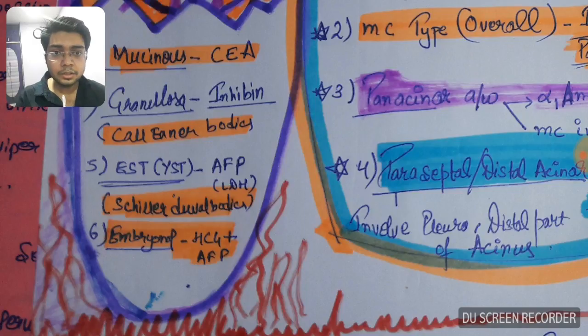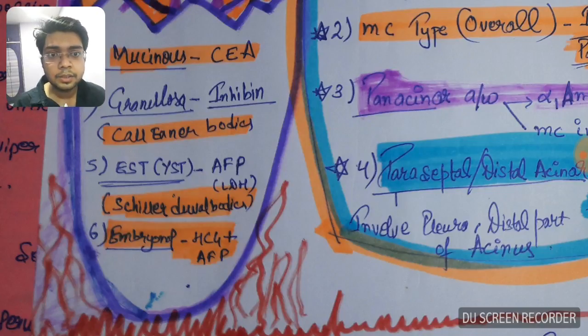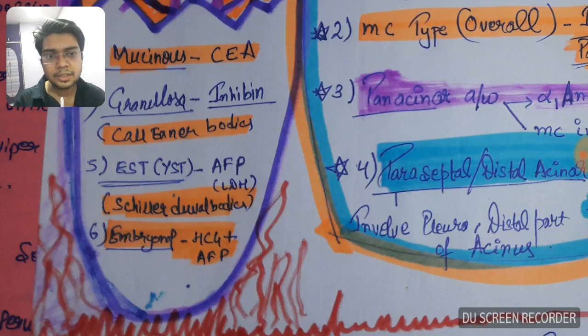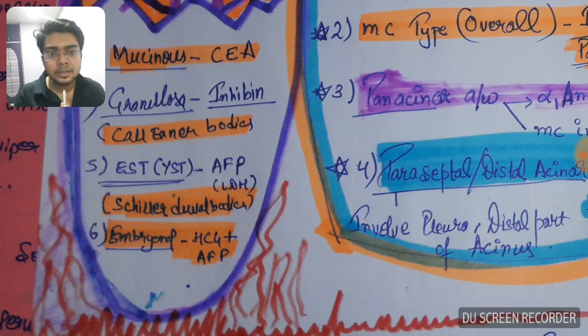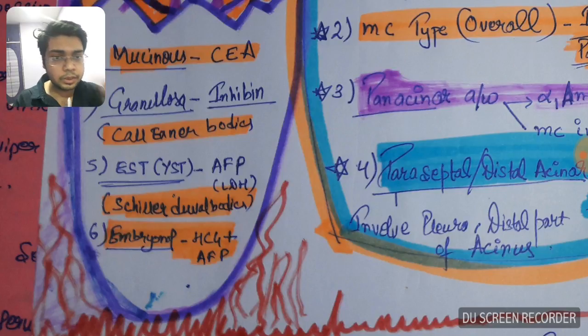How I remember this I can tell you is that this is endodermal sinus tumor. What you can remember is this is very chilled in the endoderm is chilled and thus the Schiller-Duval bodies. Just related with anything for the remembering, for purpose only, so that you can recall in your exam. For embryonal cell carcinoma ovarian tumor, it is HCG plus AFP.